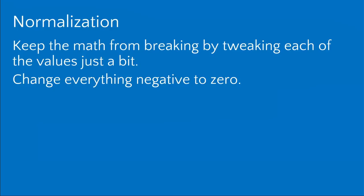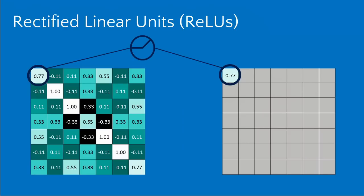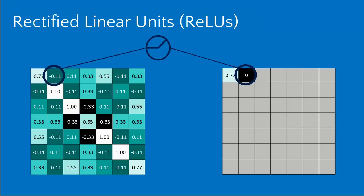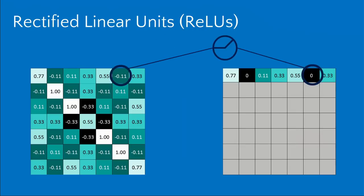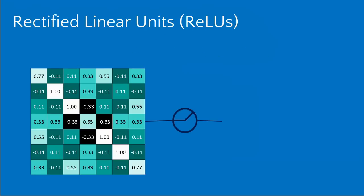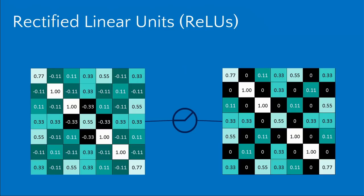The last ingredient we need is normalization. This keeps the math from breaking by taking everything that's negative and changing it to zero — this is called a rectified linear unit. It's a fancy name for something that just takes anything negative and makes it zero. A value of 0.77 — not negative, it doesn't touch it. But minus 0.11 — it's negative, so it bumps up to zero. Everything that was negative is now zero. This keeps things from becoming unmanageably large as you progress through subsequent layers.